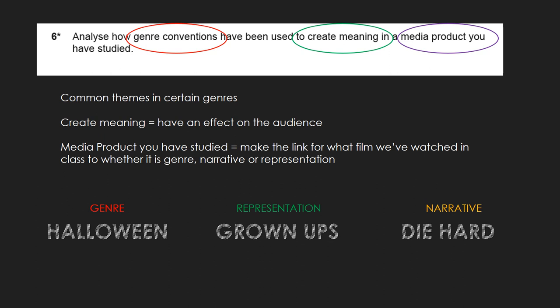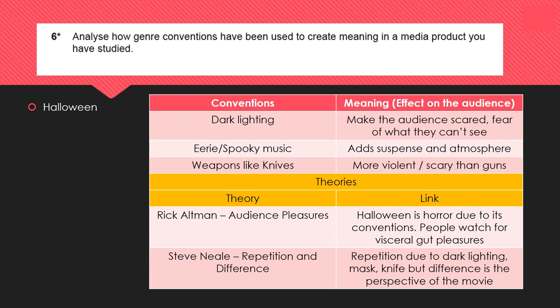Here's a question about genre conventions: 'Analyse how genre conventions have been used to create meaning in a media product you've studied.' If you break it down — common themes in certain genres, the effect on the audience, and what you actually looked at in class — for genre we looked at the film Halloween. You don't need to embed clips, but go do your own research. Look at the conventions first. Write all your evidence, then put theories in to back it up.